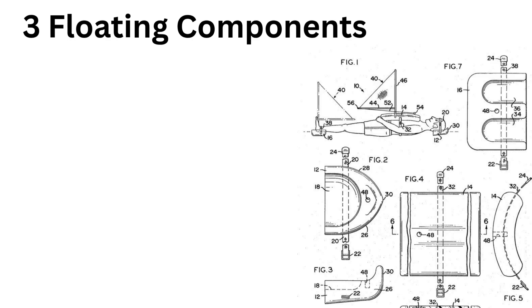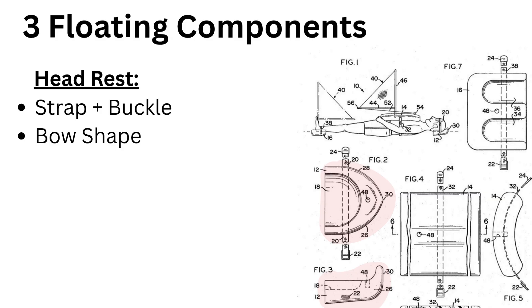Let's first talk design. The human body sail consists of three floating components. First there's the headrest. That includes a strap and a buckle to fasten around your forehead. It also has a hydrodynamic shape like a ship bow, so you can cruise full speed ahead.